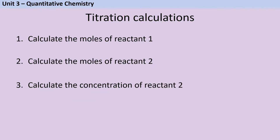Titration calculations can be broken down into three steps. We'll look at each of these individually and then put them back together in order to complete extended calculations. In almost every quantitative chemistry calculation you meet in GCSE chemistry, your starting point will be to work out the moles of something.